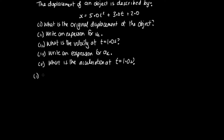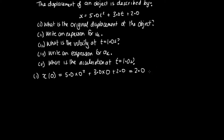To do Part 1, we're asked what is the original displacement of the object. To find that, we need to substitute in t = 0. So we evaluate x(0): that's 5.0 times 0 squared plus 3.0 times 0 plus 2.0. So 5 times 0 is 0, 3 times 0 is also 0, so this equals 2.0. The displacement at t = 0 is 2.0 meters.